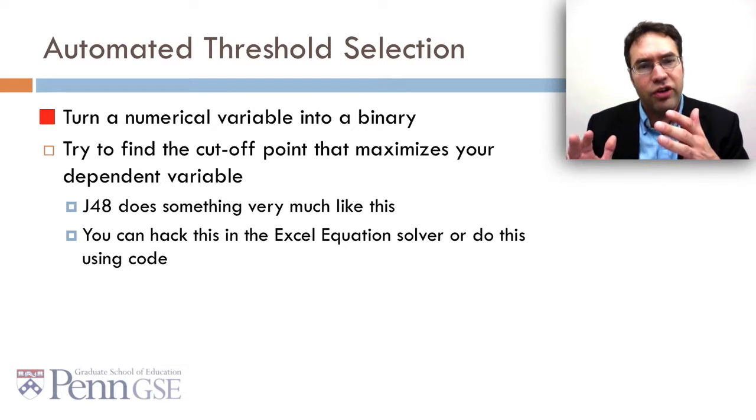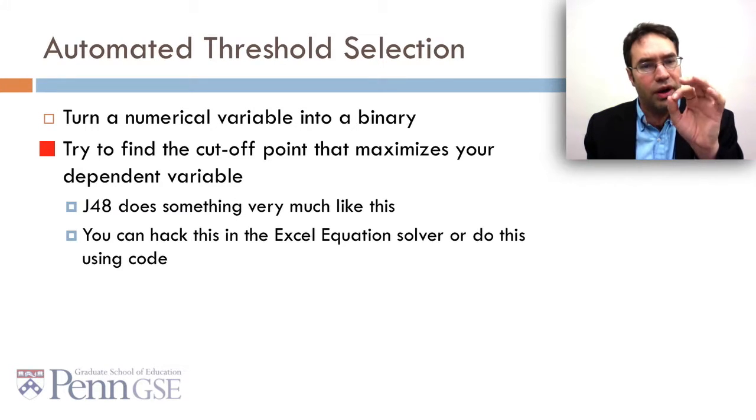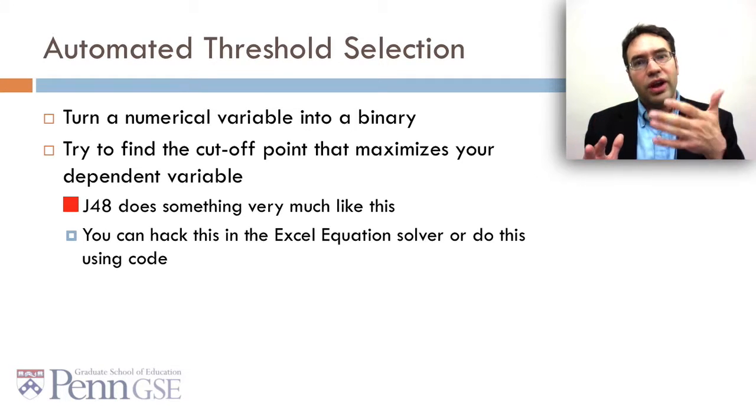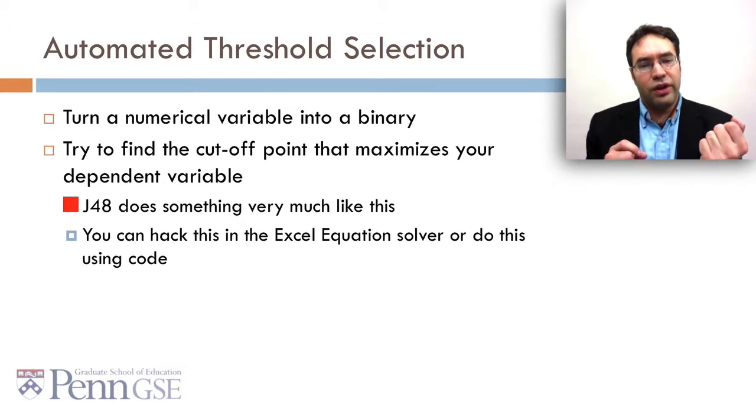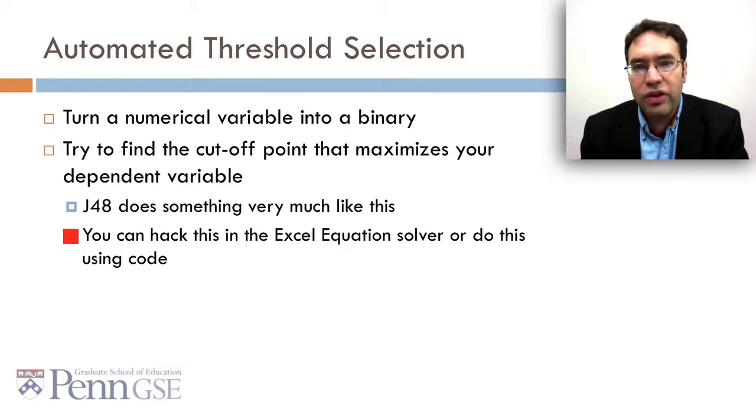Another method for automated feature generation is automated threshold selection, where you turn a numerical variable into a binary. What you do here is you try to find the cutoff point that maximizes your dependent variable. J48 actually ends up doing something very much like this. So if you're doing J48, you really don't need to binarize necessarily. But if you're using other algorithms, it might be useful. Now, it turns out that you can hack this in the Excel equation solver, or you can do this using code.